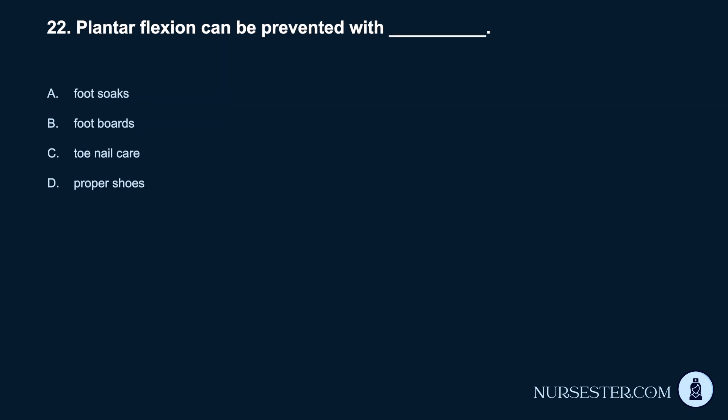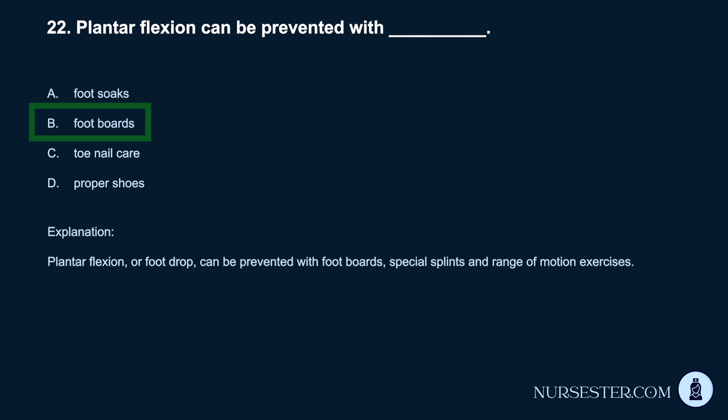Question 22. Plantar flexion can be prevented with: A. Foot soaks. B. Foot boards. C. Toenail care. D. Proper shoes. Correct answer: B. Foot boards. Plantar flexion, or foot drop, can be prevented with foot boards, special splints, and range of motion exercises.